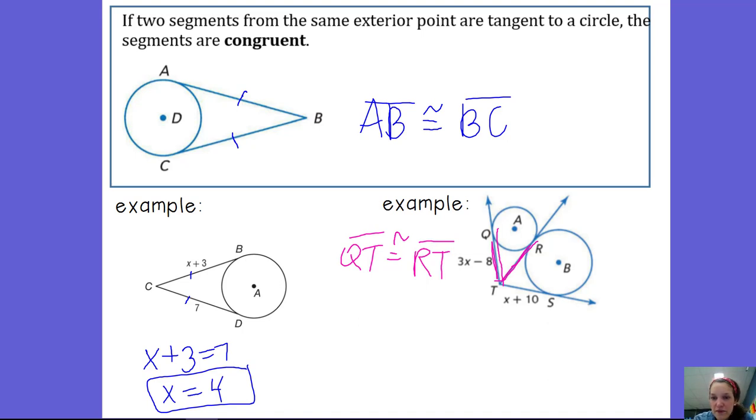And then, for circle B, segment ST and RT are both tangent to circle B, they intersect at point T, so they're congruent as well.